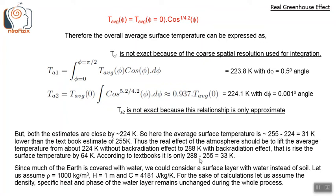The textbook estimate of 33 Kelvin for the back radiation effect is based on 288 minus 255. But this 255 was calculated using the assumption that 70% of the incoming radiation is absorbed at the surface, when in fact only 45% is. So this 33 Kelvin is a very large underestimation. The textbook estimate of 33 Kelvin for the back radiation effect is highly underestimated.